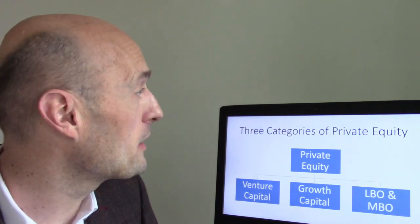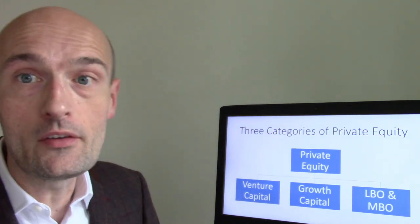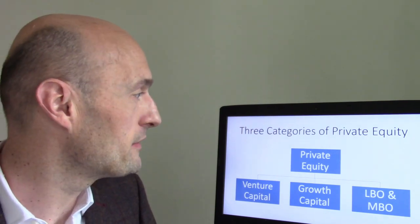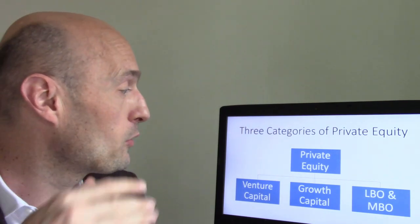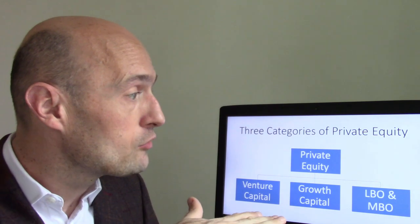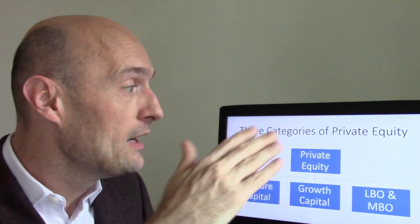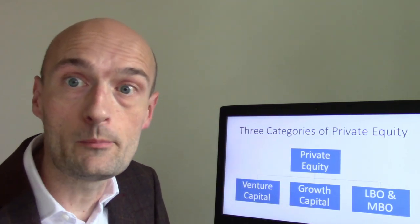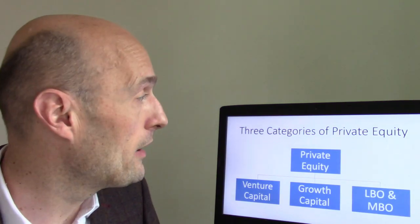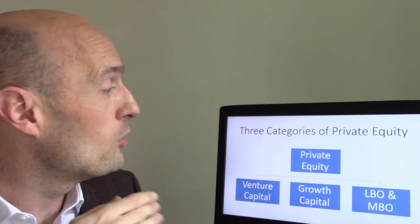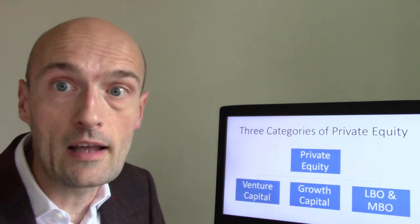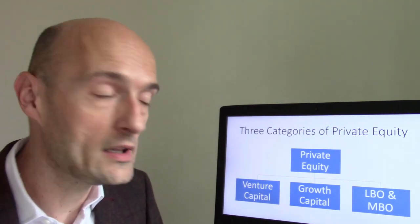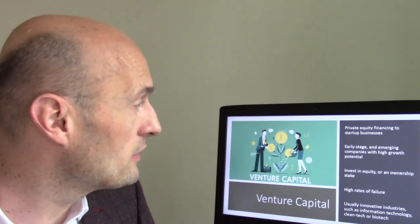We can break private equity down into three basic categories: venture capital, growth capital, and LBOs and MBOs. LBO stands for leveraged buyout, MBO stands for management buyout. We'll talk about each category separately during today's class.